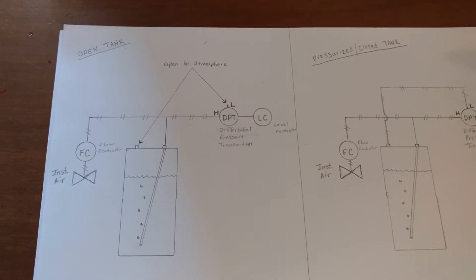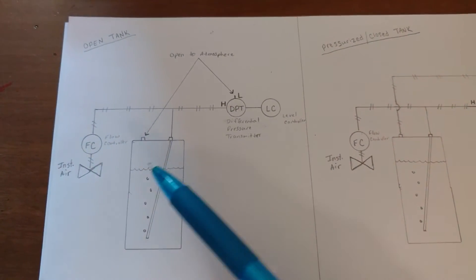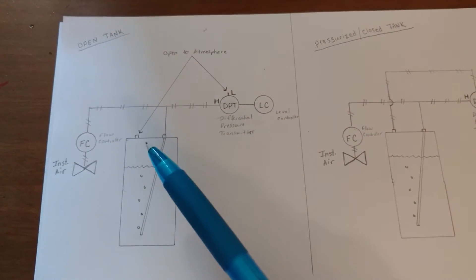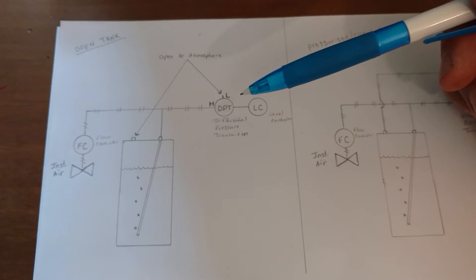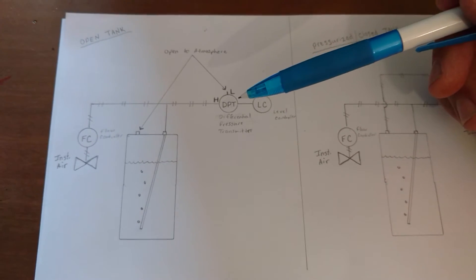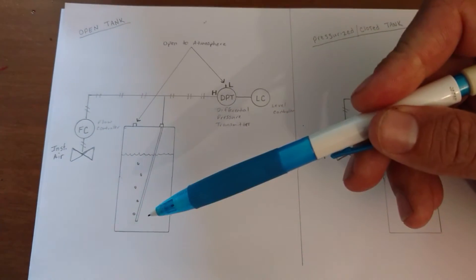So in this case, there's an open tank that's vented to atmosphere. We are using a differential pressure transmitter because we can't use a hydrostatic pressure transmitter since we don't have access to the bottom of the tank.